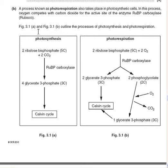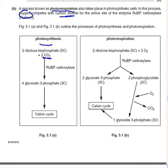Figures 3.1, 3.1a, and 3.1b outline the process of photosynthesis. Photorespiration is highlighted in bold. In normal photosynthesis, oxygen competes with carbon dioxide for the active site. We have 2 CO₂ molecules and we form glycerate-3-phosphate, a 3-carbon molecule. The 4 here means 2 ribulose bisphosphates form 4 of these glycerate-3-phosphate molecules.